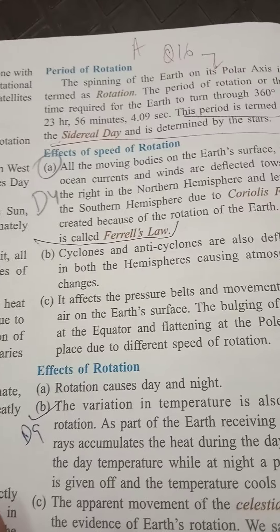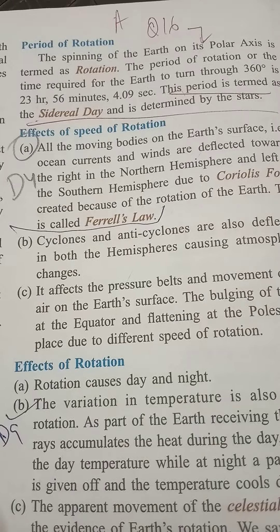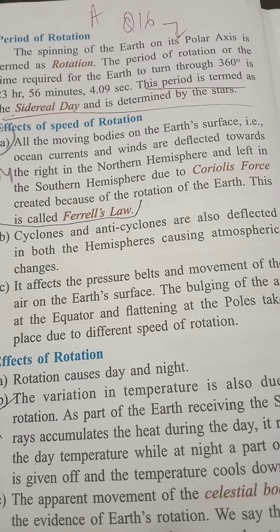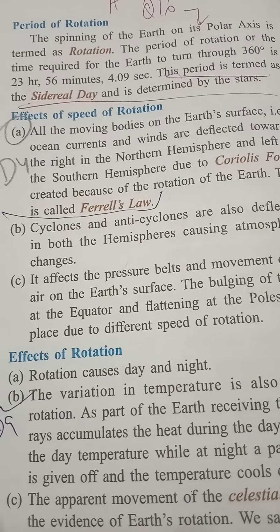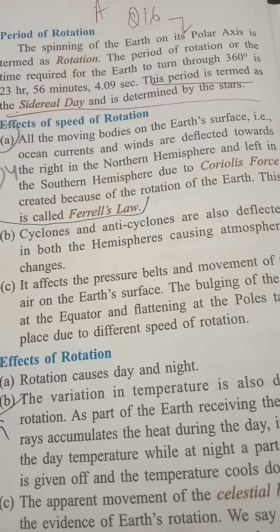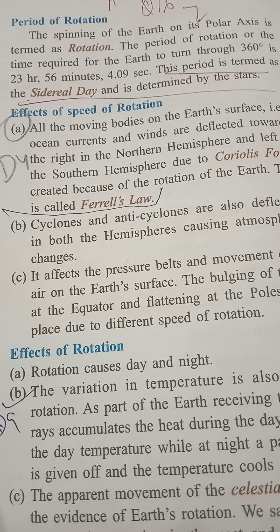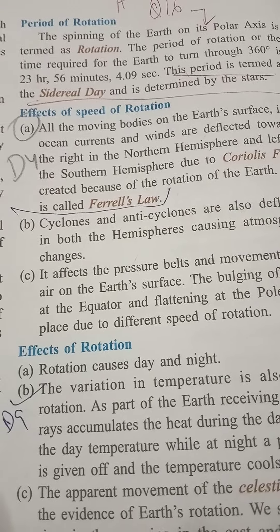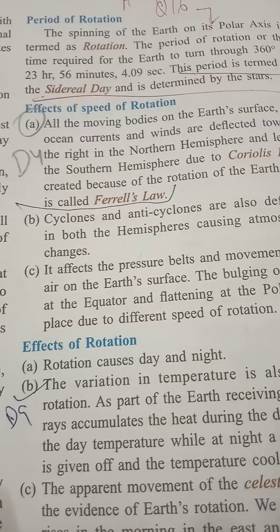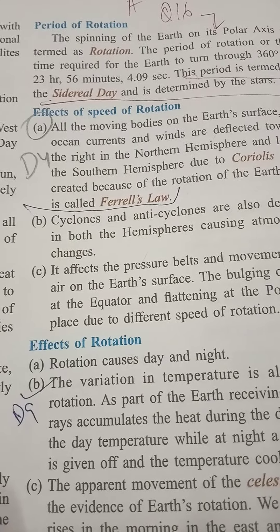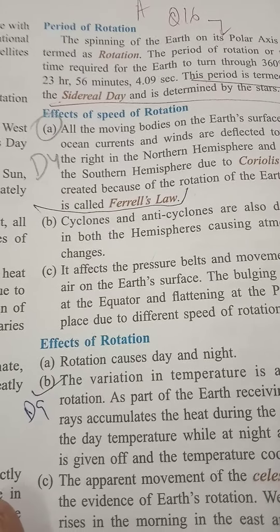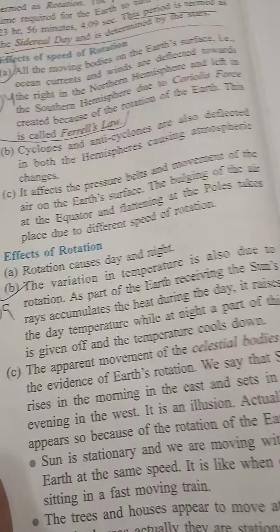Regarding the period of rotation: because the earth is a sphere, it requires 360 degrees to complete one full rotation. The earth rotates from west to east, and the exact period is 23 hours, 56 minutes, and 5.09 seconds — approximately 24 hours. This period is termed the sidereal day — the accurate time the earth takes to complete one rotation around its axis, determined by reference to the stars.